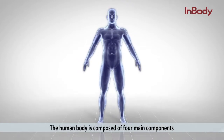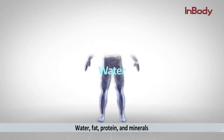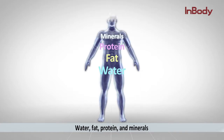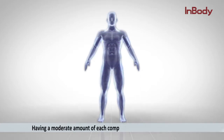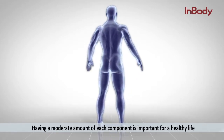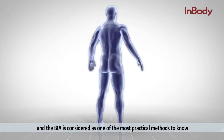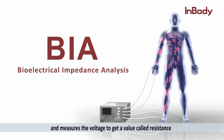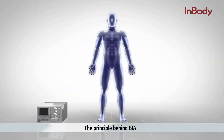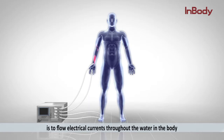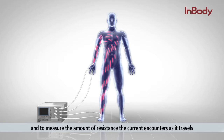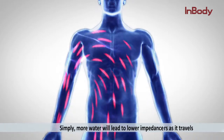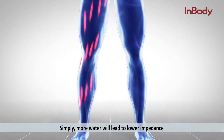The human body is composed of four main components: water, fat, protein, and minerals. Having a moderate amount of each component is important for a healthy life. BIA — Bioelectrical Impedance Analysis — is considered one of the most practical methods to assess body composition. This method applies small currents throughout the body and measures the voltage to get a value called resistance, also known as impedance. The principle behind BIA is to flow electrical currents through the water in the body and measure the amount of resistance the current encounters — simply put, more water leads to lower impedance.